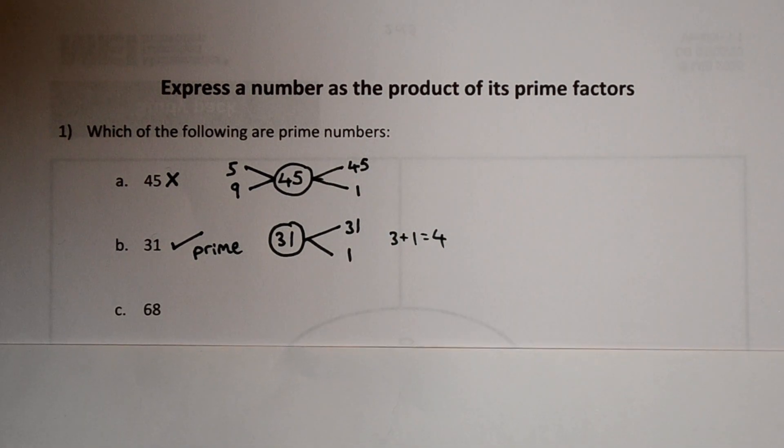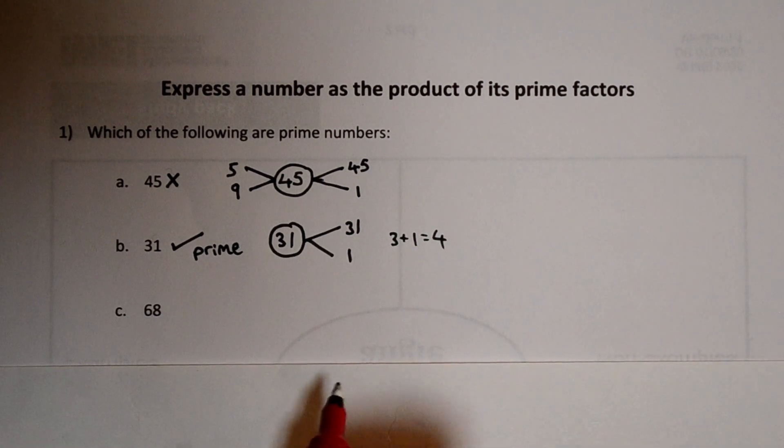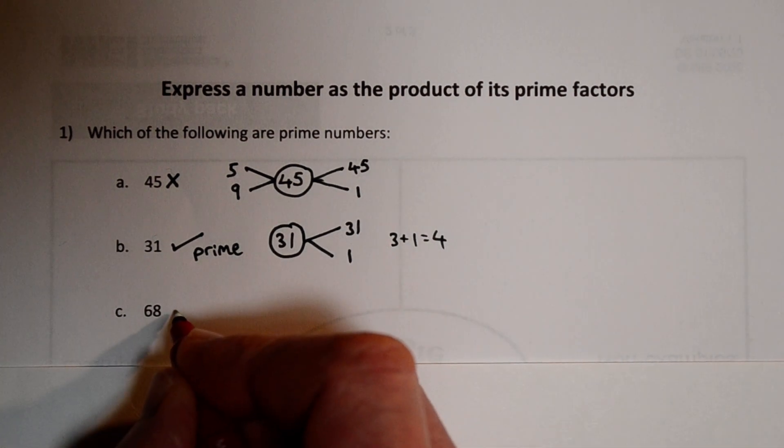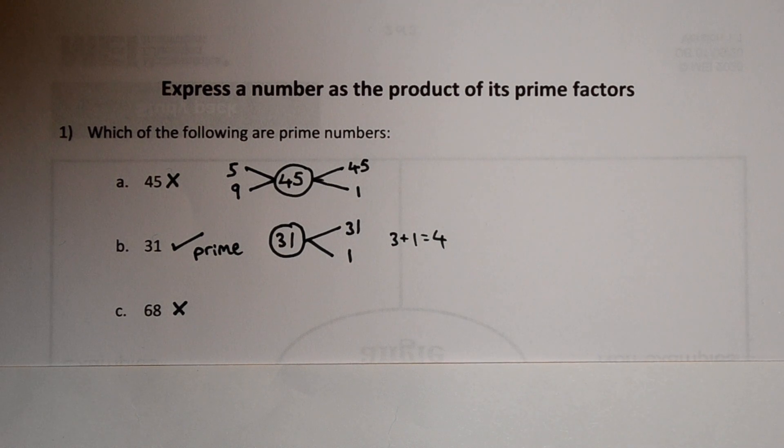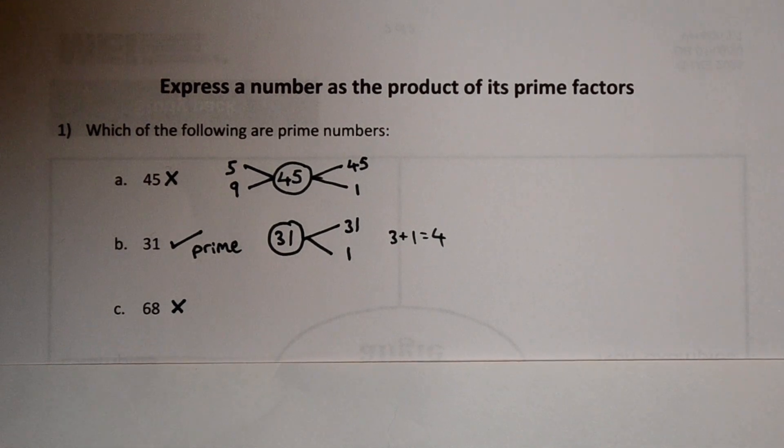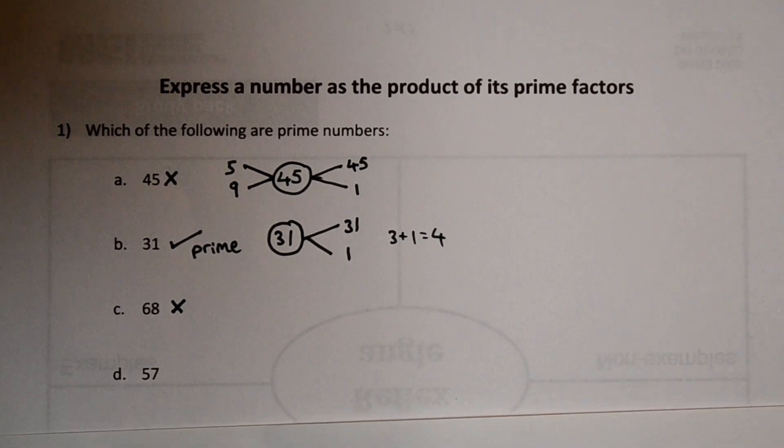Let's try another one. How about 68? You can see straight away 68 divides by 2. So as well as 68 and 1 it's got at least two more factors. And what about 57?